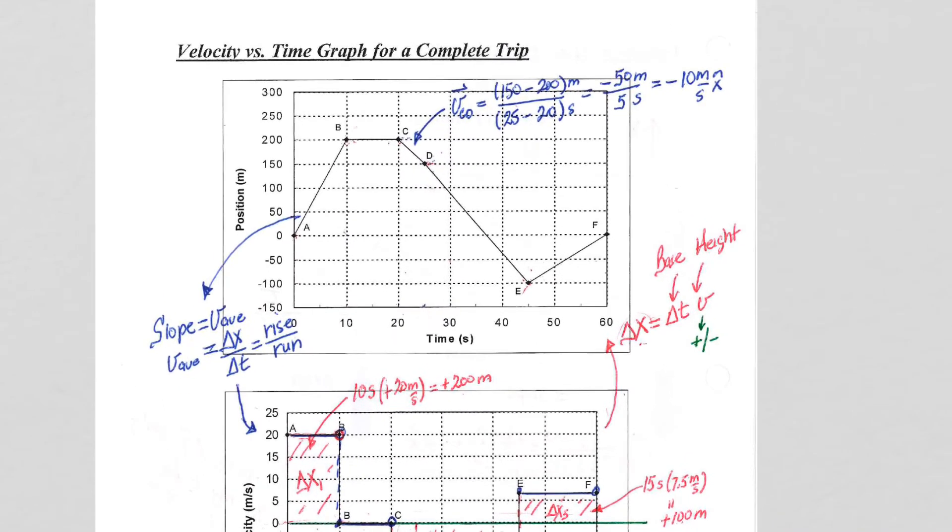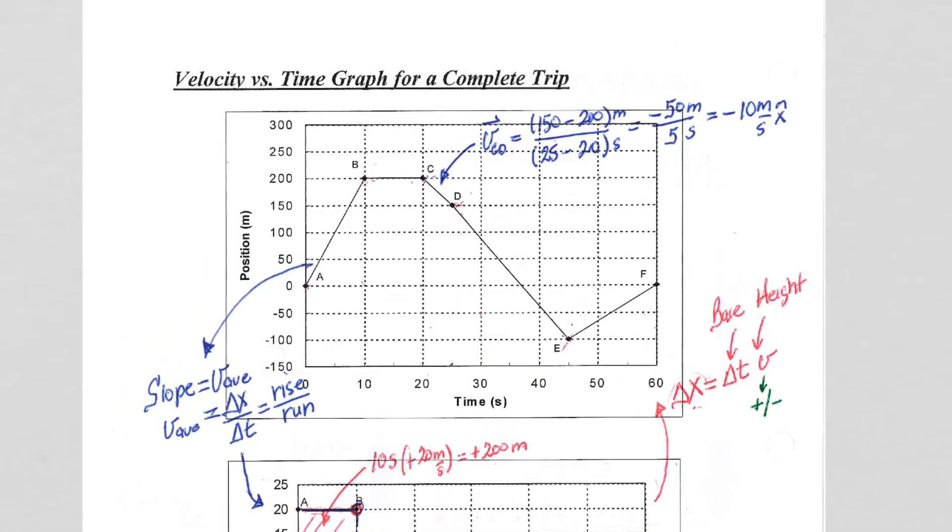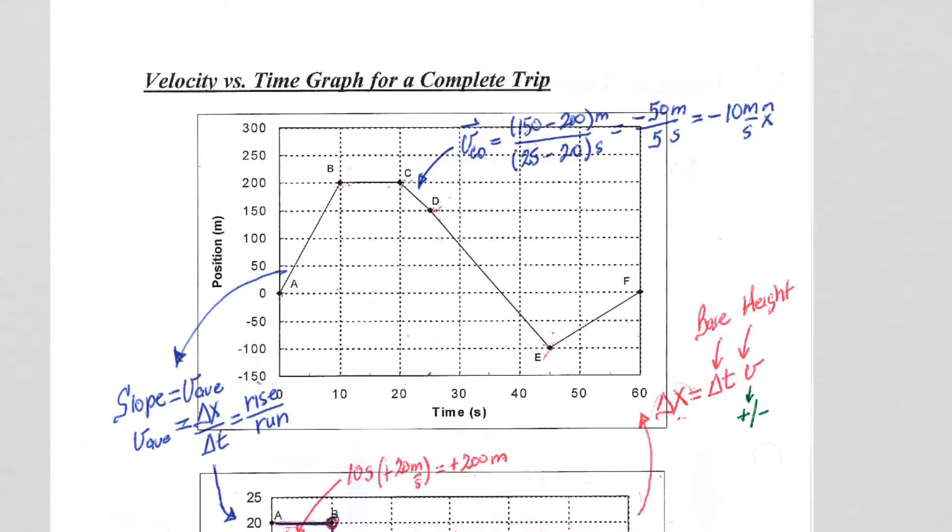On this page of notes, we're going to continue to look at our position versus time graphs and how to generate a velocity versus time graph and vice versa, taking a look at our velocity versus time graph and going back to our position versus time graph. It's more of the same that we just talked about, but now we have some different time intervals and different values to look at. Let's walk through it and see how you would generate the velocity versus time graph from this position versus time graph.